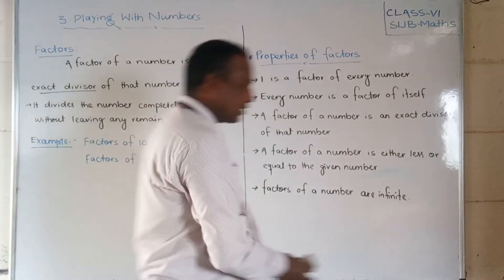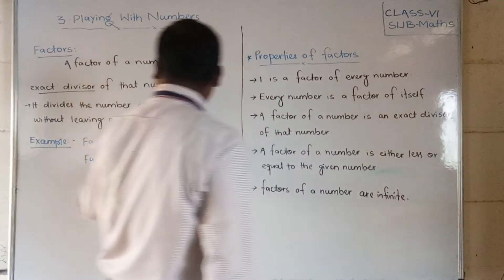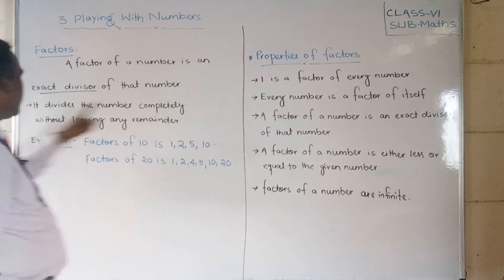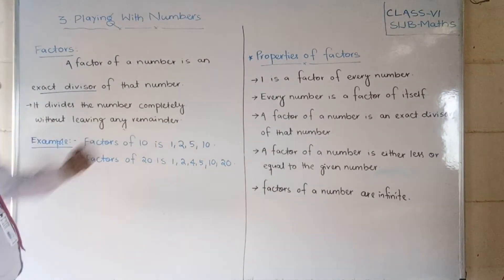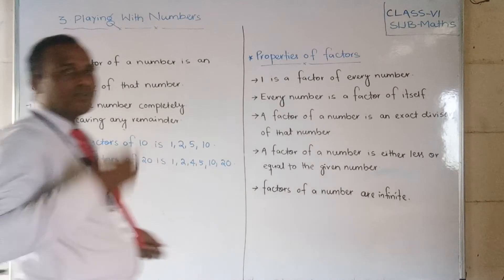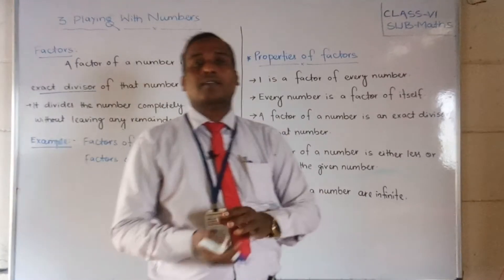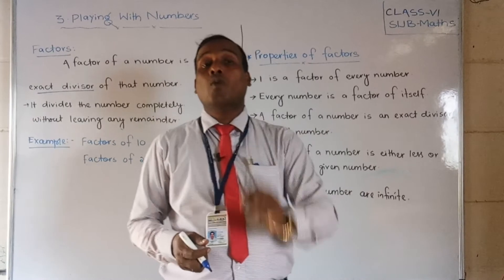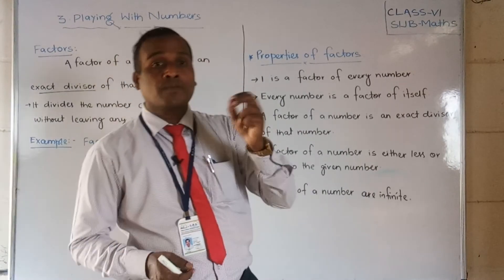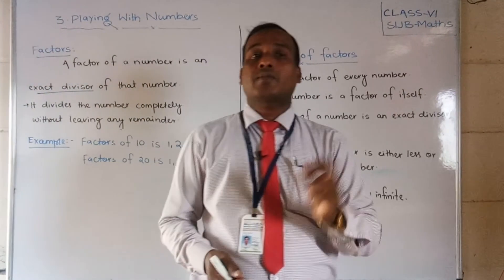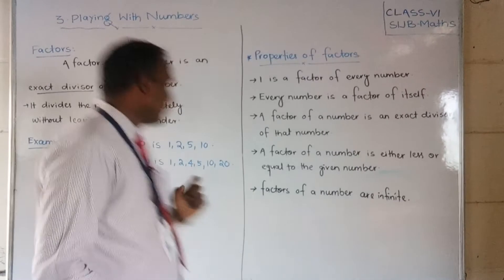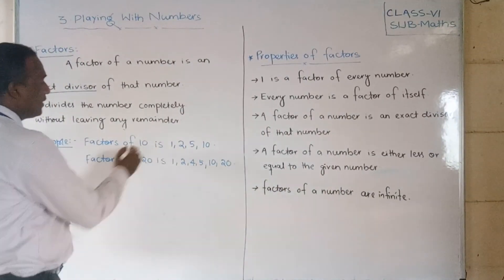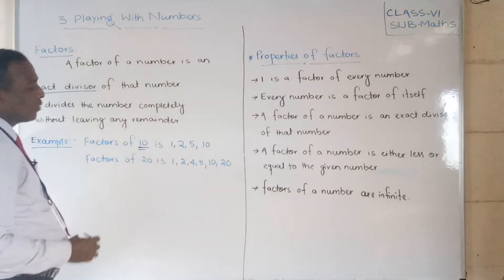To summarize: a factor divides the number completely without leaving any remainder. Whenever we divide one number by another and the division is complete — meaning the remainder is zero — then that divisor is called a factor of the given number.